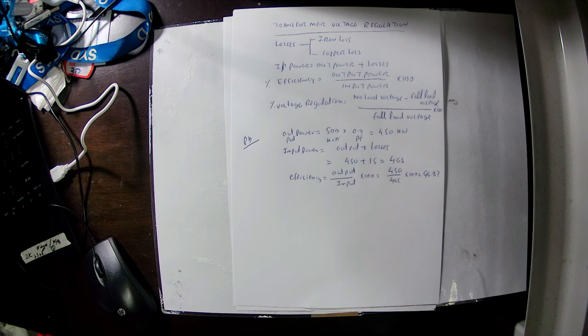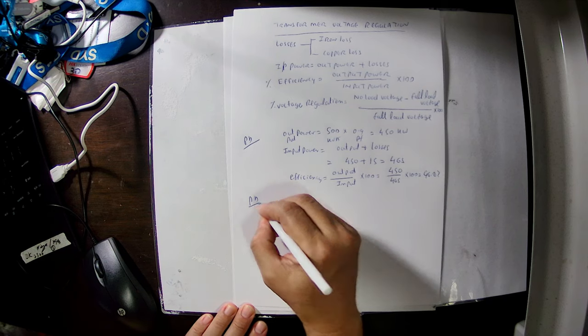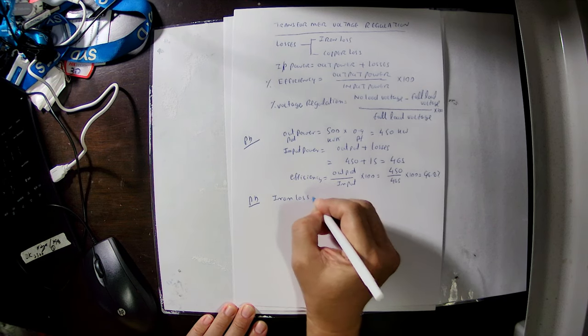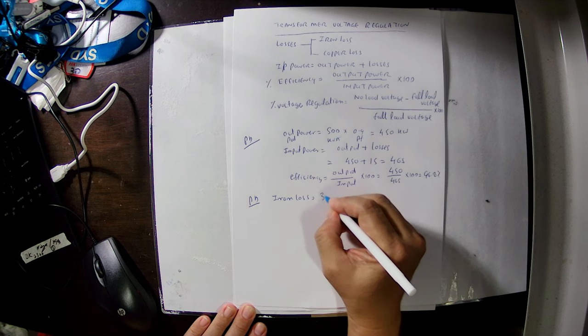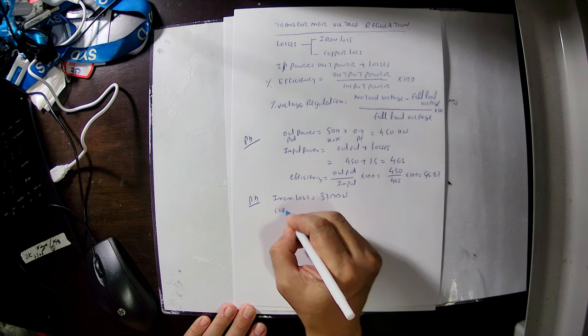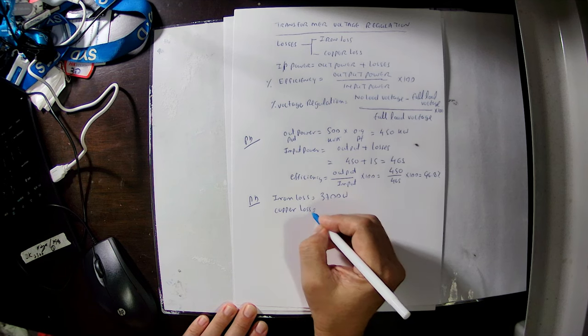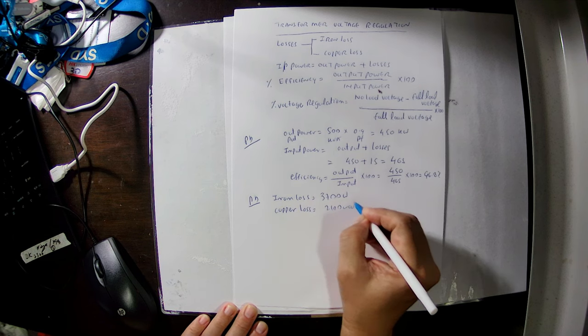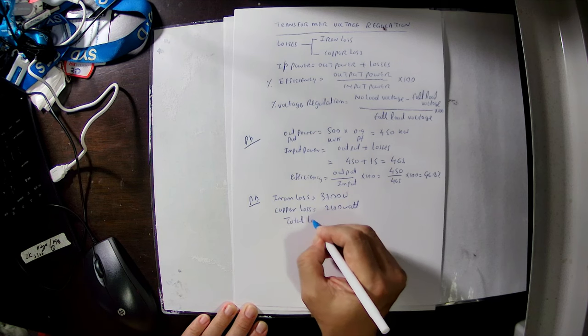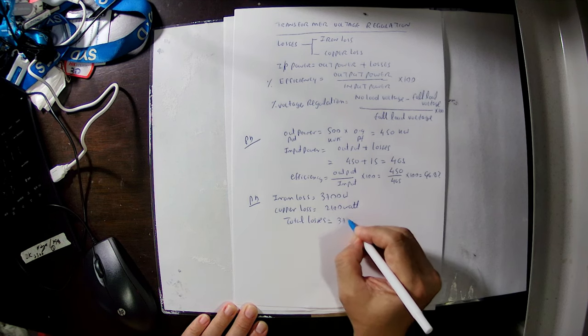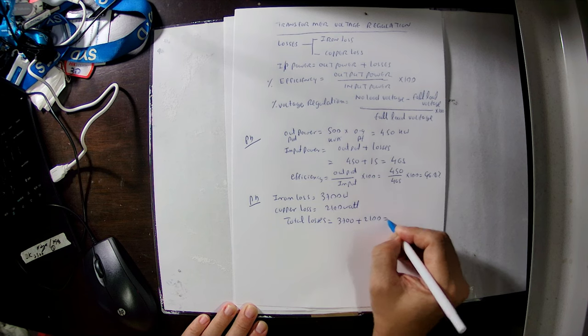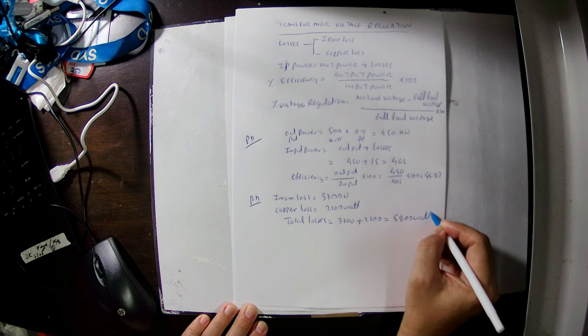In this problem, we need to calculate transformer losses given: open circuit test iron loss is 3700 W, and short circuit test copper loss is 2100 W. Total transformer loss equals iron loss 3700 W plus copper loss 2100 W, giving a total loss of 5800 W.